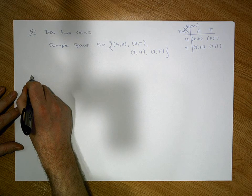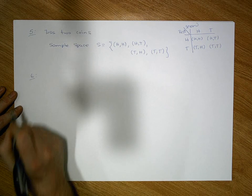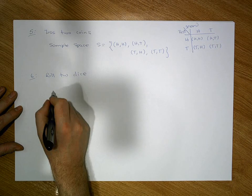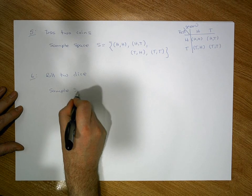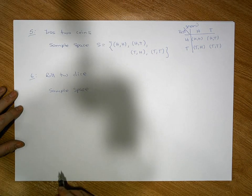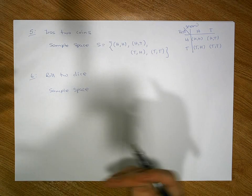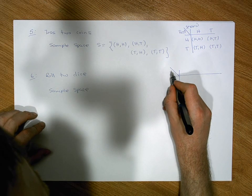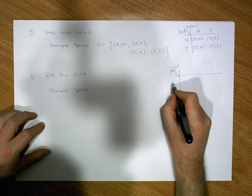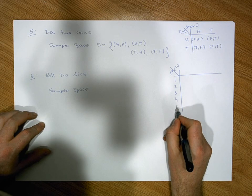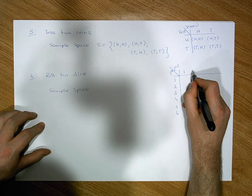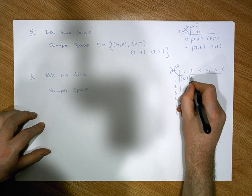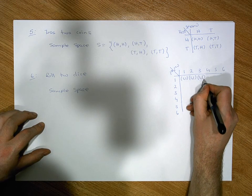Let's consider something more complicated: rolling two dice. The sample space consists of all ordered pairs of values from the first die paired with all values of the second die. Using a table with the first die showing 1 through 6 and the second die showing 1 through 6, the ordered pairs include (1,1), (1,2), (1,3), (1,4), (1,5), (1,6), (2,1), (2,2), and so on through all 36 combinations.